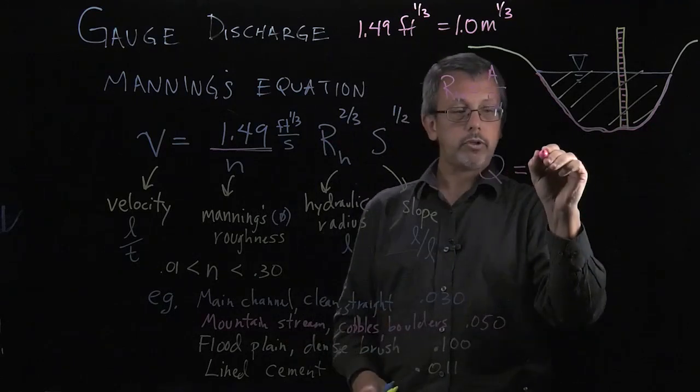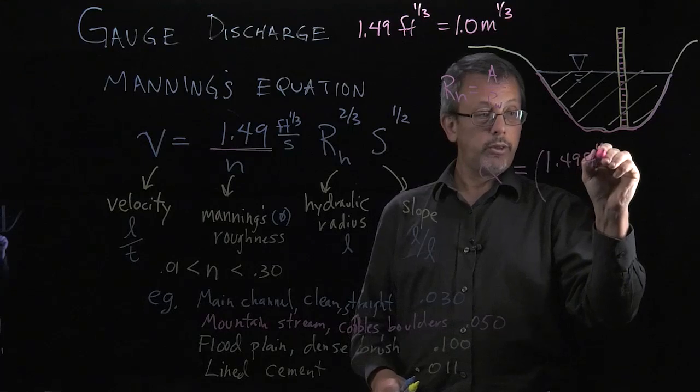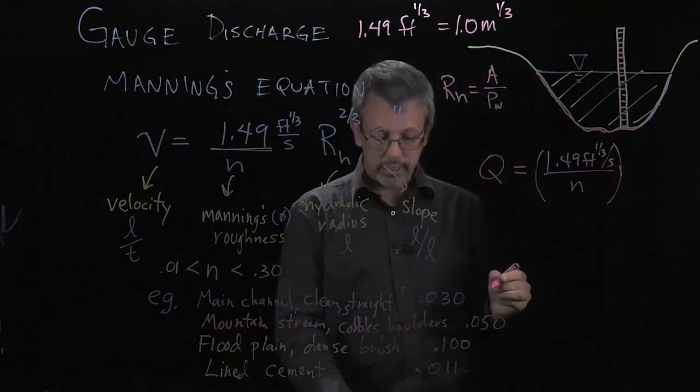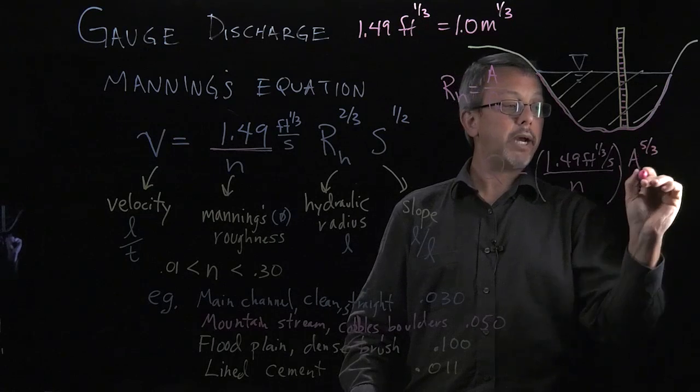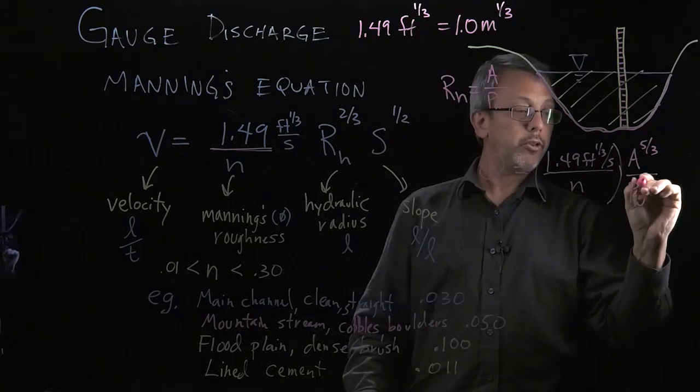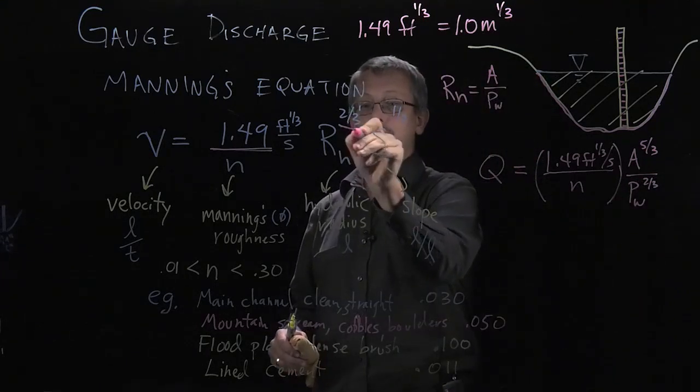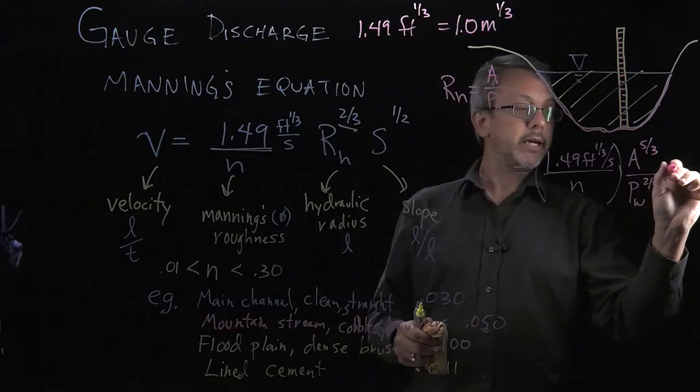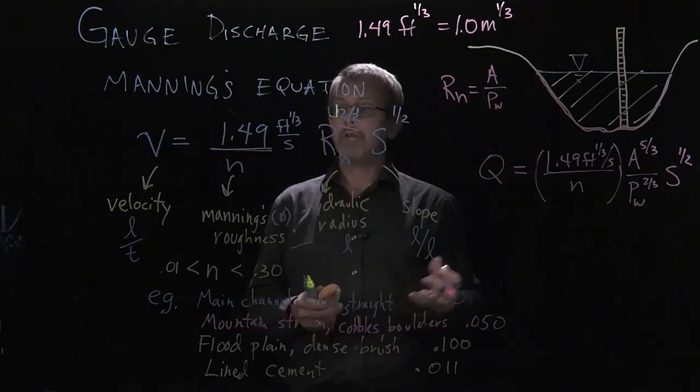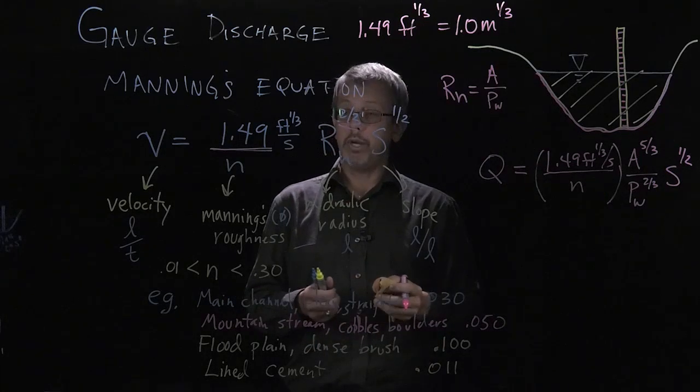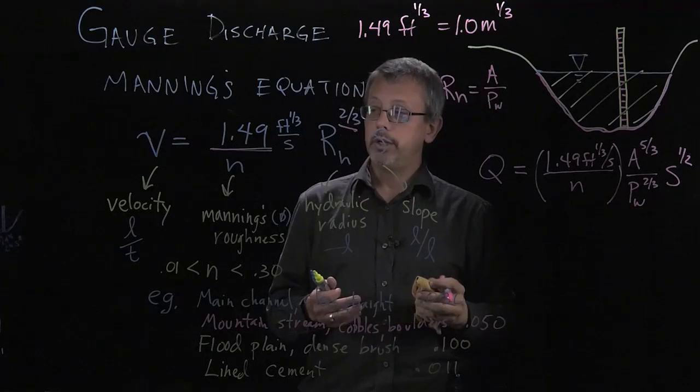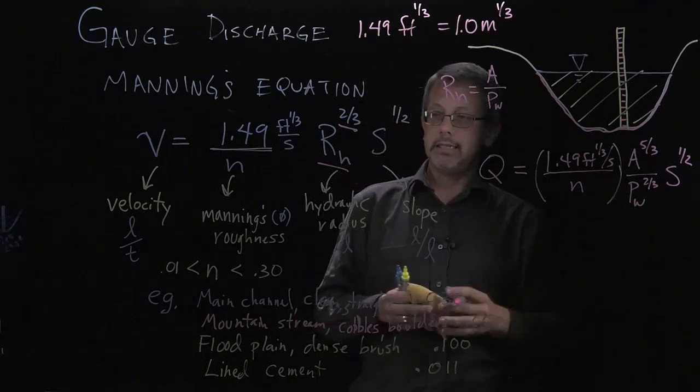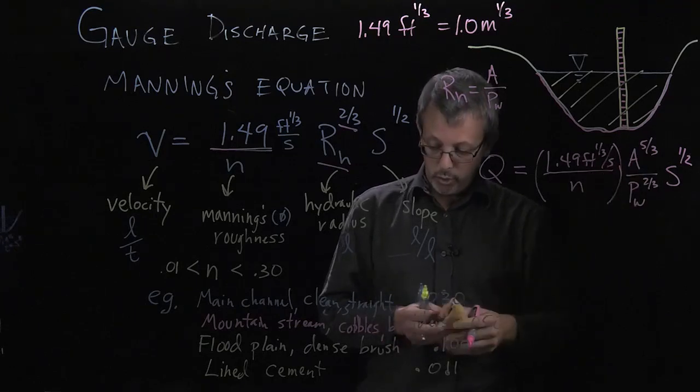If I do that, I get a version of Q, 1.49 feet to the one-third per second over N. There's the Manning's coefficient piece. Then I can say A to the five-thirds power over wetted perimeter to the two-thirds power. In other words, there's the two-thirds, the A to the two-thirds, plus you're multiplying by A, so you add three-thirds and you get to the five-thirds power. And then that's times the slope to the one-half power. So that's another commonly seen version of Manning's equation where we're talking about the flow rate instead of talking about the velocity. And in this case, we've eliminated the hydraulic radius by replacing it, and now we just have versions of our area and our wetted perimeter.